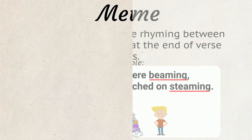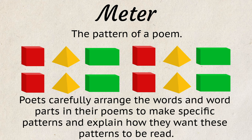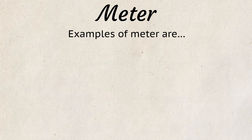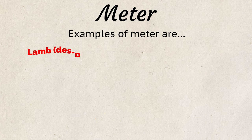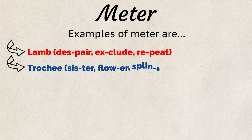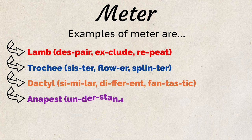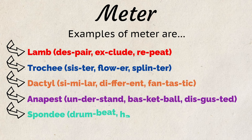A meter is the pattern of a poem. Poets carefully arrange the words or word parts in their poems to make specific patterns and explain how they want these patterns to be read. Examples of meter are iamb, trochee, dactyl, anapest, spondee, and pyrrhic.